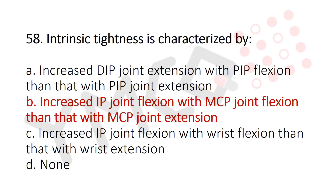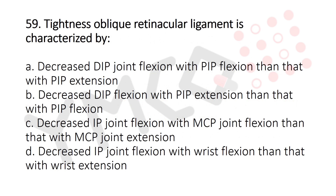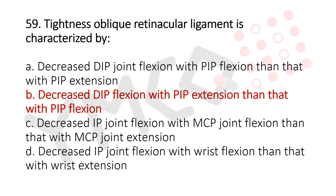Question 59: Tightness of the oblique retinacular ligament is characterized by — Option A: decreased DIP joint flexion with PIP flexion than with PIP extension, Option B: decreased DIP flexion with PIP extension than with PIP flexion, Option C: decreased IP joint flexion with MCP joint flexion than with MCP joint extension, Option D: decreased IP joint flexion with wrist flexion than with wrist extension. The answer is Option B, decreased DIP flexion with PIP extension than with PIP flexion.